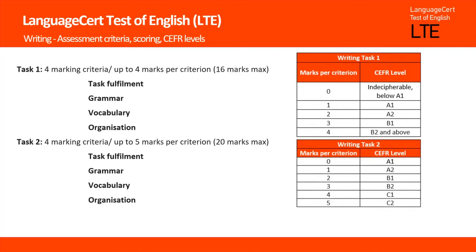To evaluate the candidate's response to task two, there are four marking criteria once again — the same criteria as before: task fulfilment, grammar, vocabulary and organisation. However, this time candidates can collect up to five marks per criterion, resulting in a total of 20 marks.